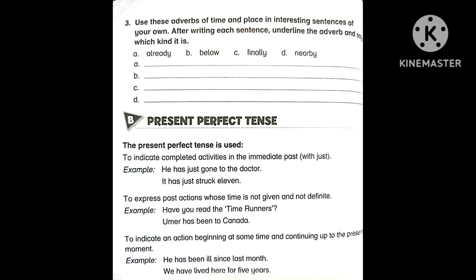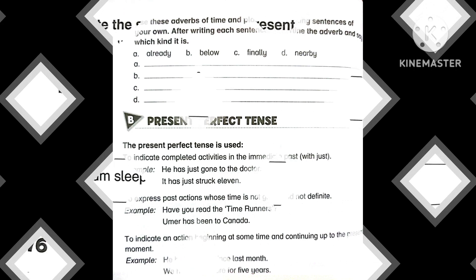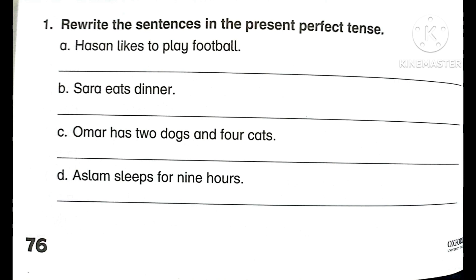The present perfect tense is also used to indicate an action that began in the past and continues up to the present moment. For example: 'We have lived here for five years' — meaning we came five years ago and are still living here up to now.